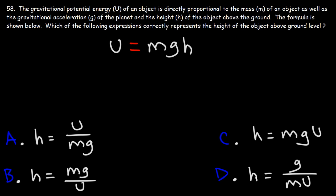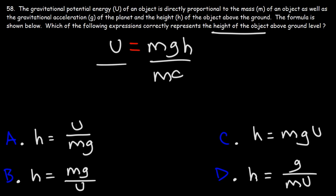Something that you need to be able to do is solve for a certain variable in an equation. In this case, we want to solve for the height h. How can we isolate h? What we need to do is divide both sides by mg so that these will cancel.